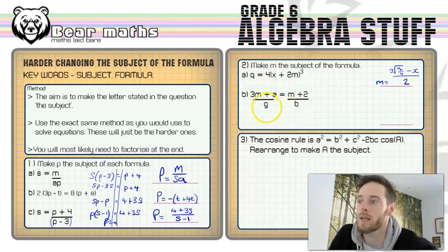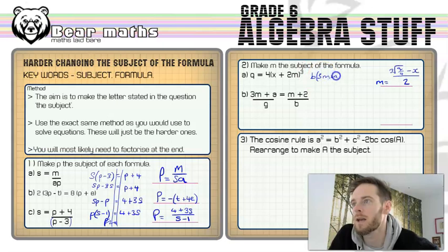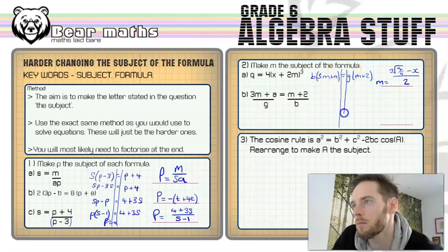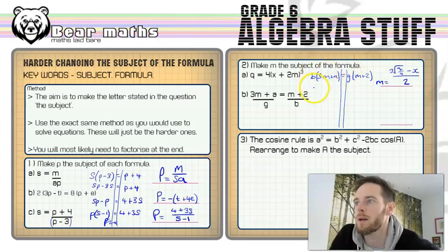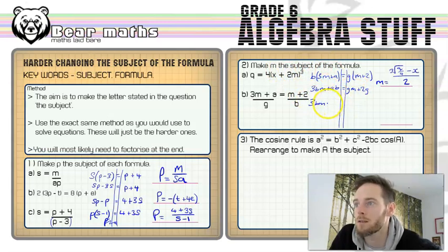Now this is where we do some cross multiplication — there are fractions on both sides. We multiply by b on both sides and simultaneously multiply by g on both sides, so we get: b times (3m plus a) equals g times (m plus 2). Now multiply out the brackets: 3bm plus ab equals gm plus 2g. Just like the earlier question, I need to get all the m terms on the same side, so 3bm minus gm, and get rid of the plus ab by taking it away on the other side: 2g minus ab.